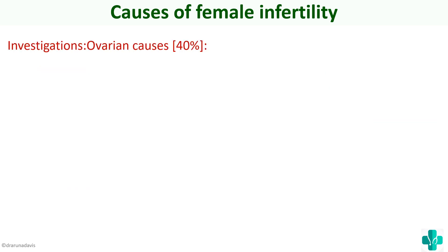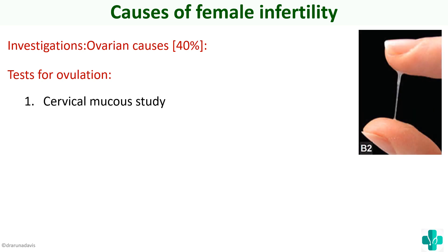Next we'll see the investigations to determine if the ovaries are functioning normally — the tests for ovulation, to know if the ovum is produced. The first test is the cervical mucus study. Here you analyze the consistency of the cervical mucus — if it is stretchable, this is called spinnbarkeit formation, which means the cervical mucus is conducive for fertilization and for the entry of sperms.